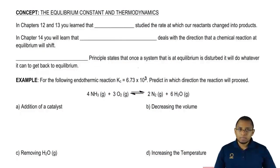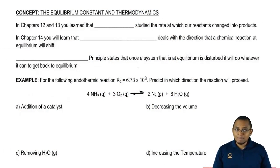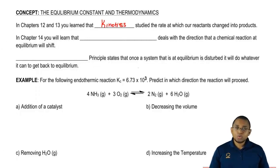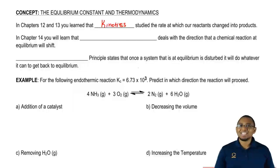We're going to say in chapters 12 and 13, or whatever chapters your book is numbered, that kinetics deals with the rate at which our reactants change into products. Remember, kinetics is concerned with speed. How fast are my reactants breaking down to produce my products?